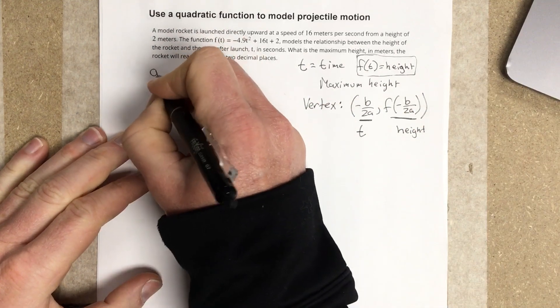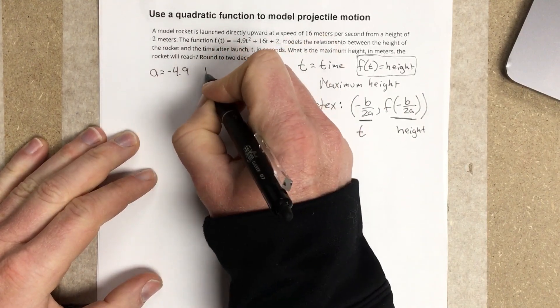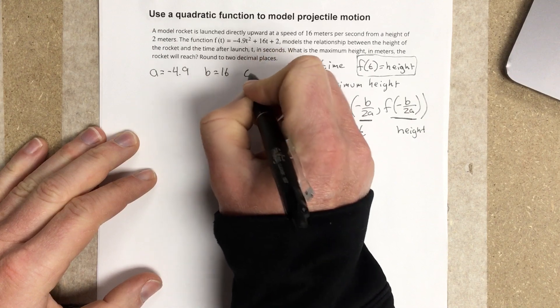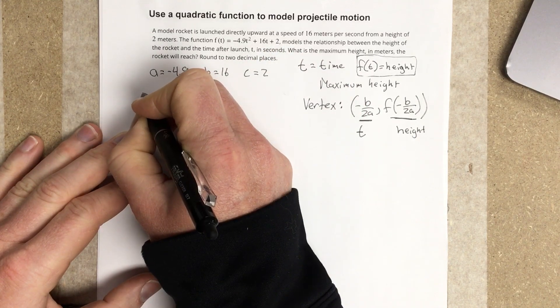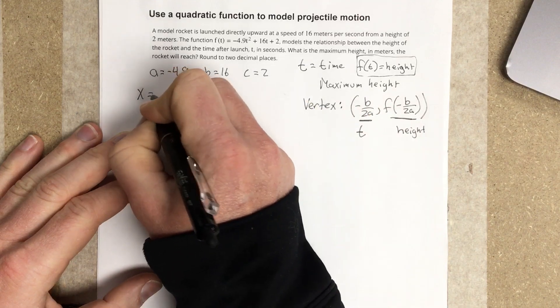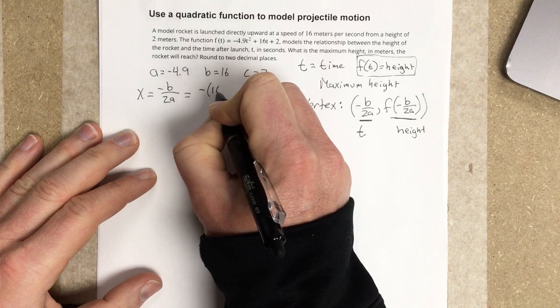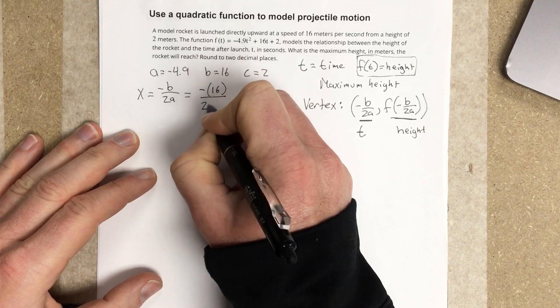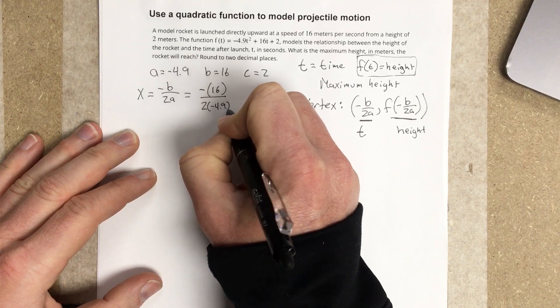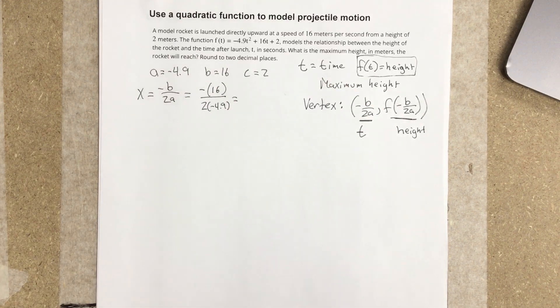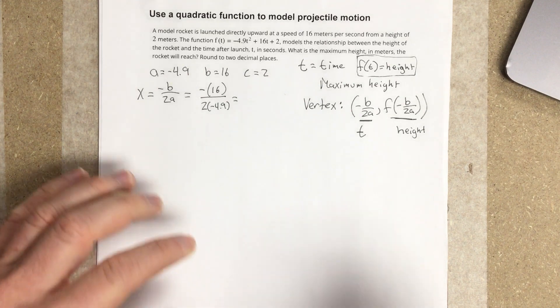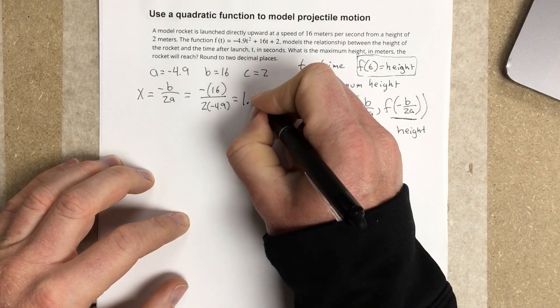Now that I have that figured out, let's write a = -4.9, b = 16, c = 2. I can find my x value for my vertex by doing negative b over 2a, which would be negative 16 over 2 times negative 4.9. Negative 16 divided by 2 times negative 4.9 is 1.63 seconds.